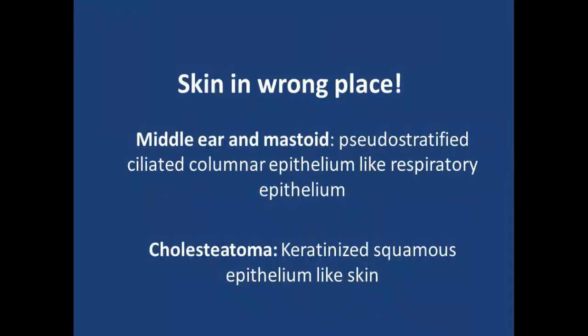So what is cholesteatoma? Cholesteatoma is the presence of keratinized squamous epithelium in the middle ear or mastoid cavity. It can be said that it is skin in the wrong place, because the middle ear and mastoid cavity is lined by pseudo-stratified ciliated columnar epithelium, and skin is keratinized squamous epithelium. So when keratinized squamous epithelium is present in the middle ear, it is a wrong one.